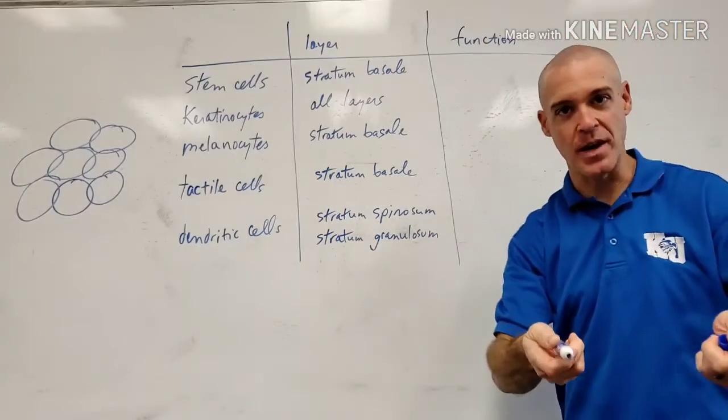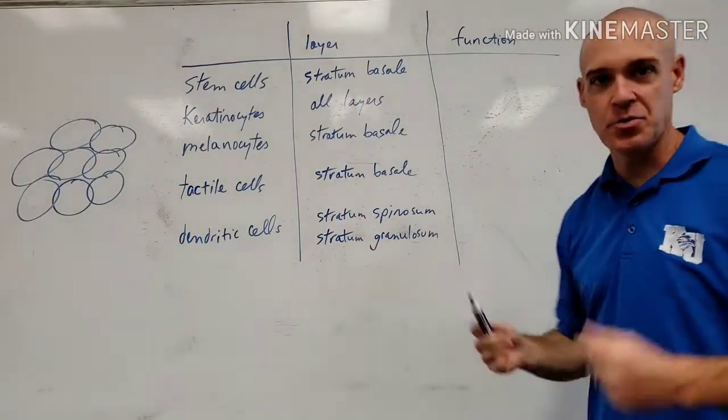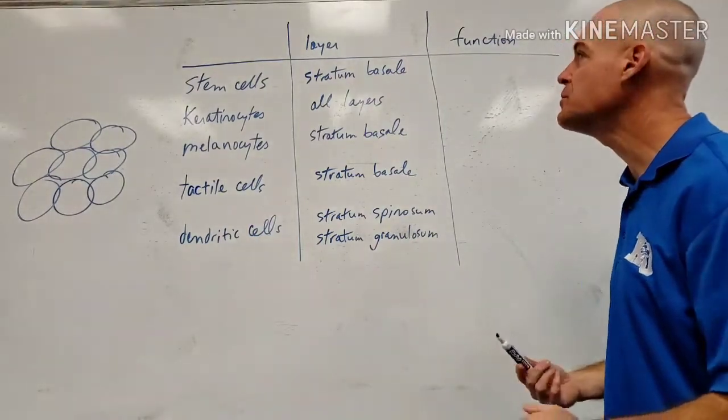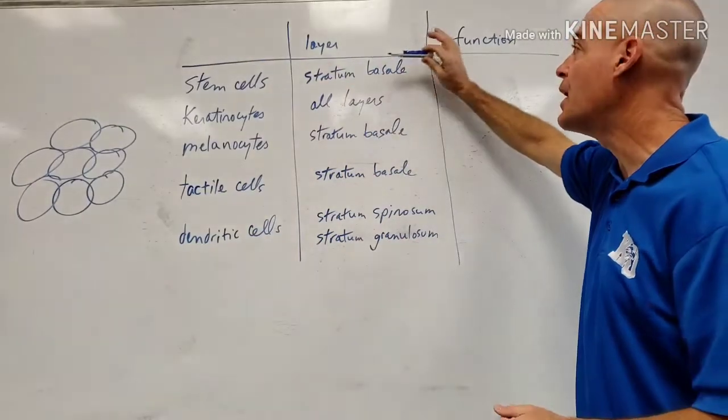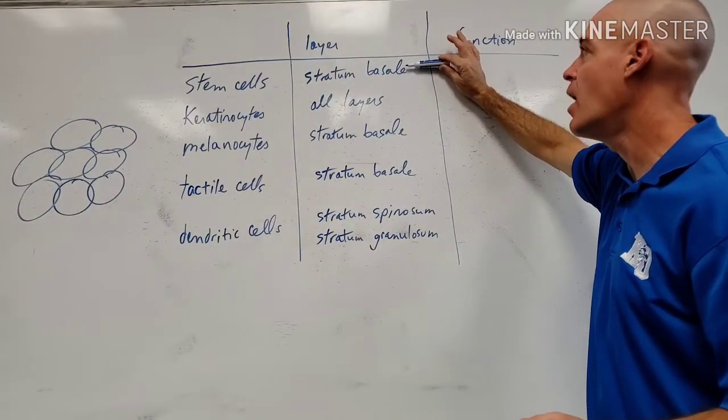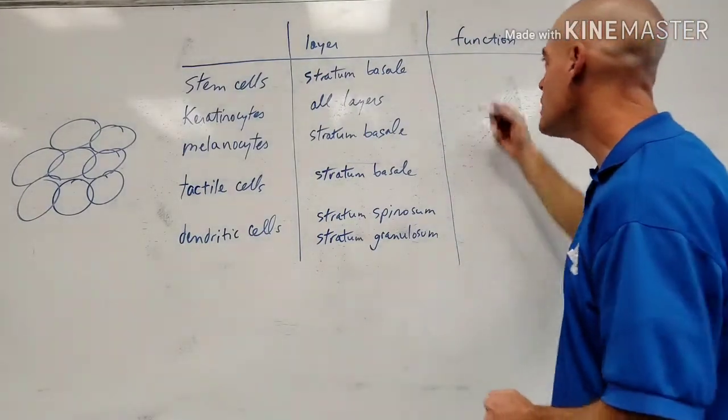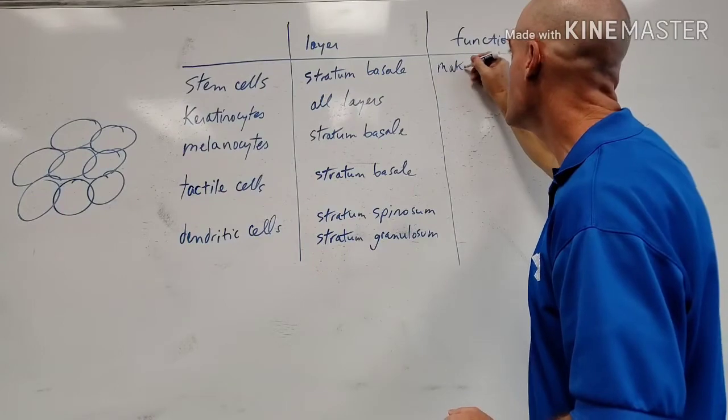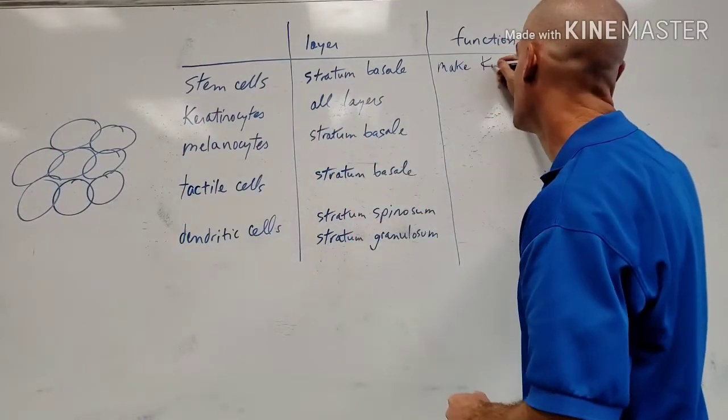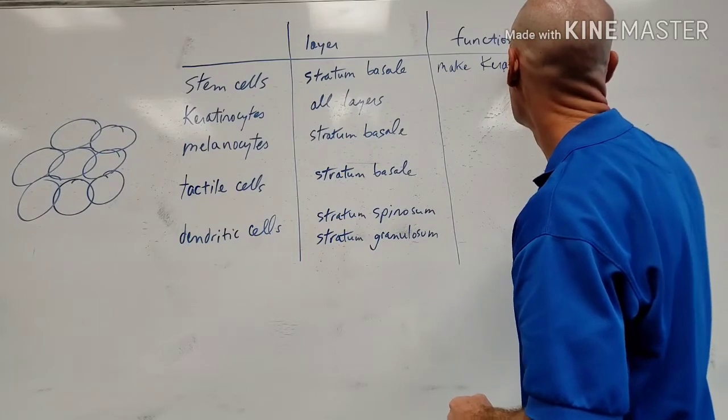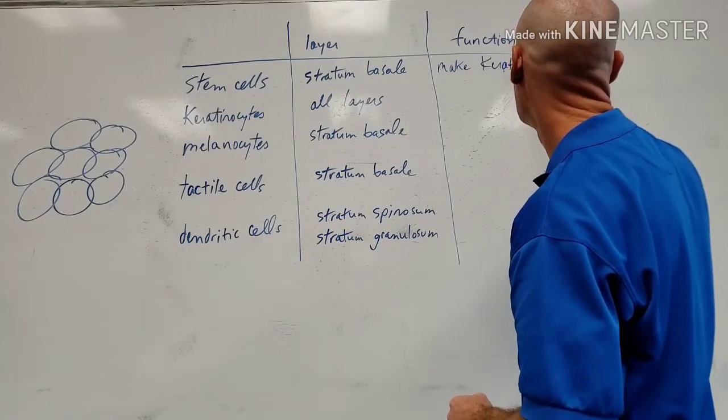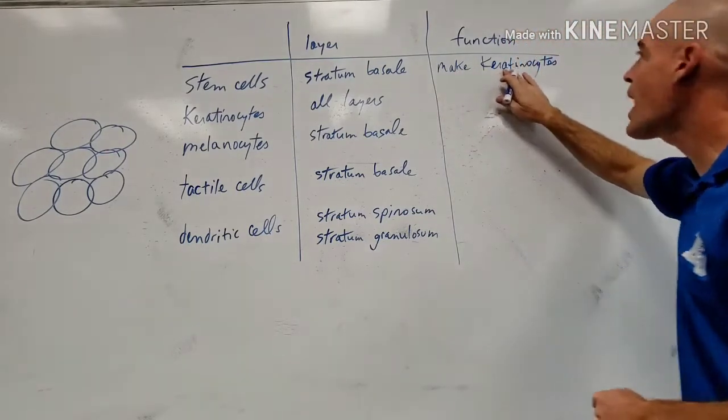Dead cells don't mitose. These are new cells which are undergoing active mitosis. The stem cell, which is definitely going to be a very active cell, is in the stratum basale. What is it doing? It is making the keratinocyte, producing the keratinocytes.